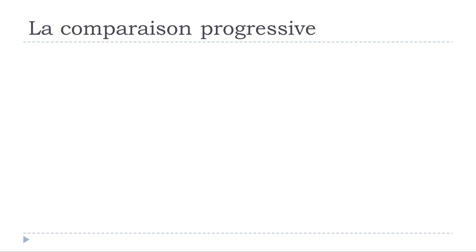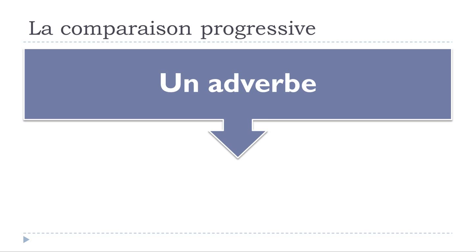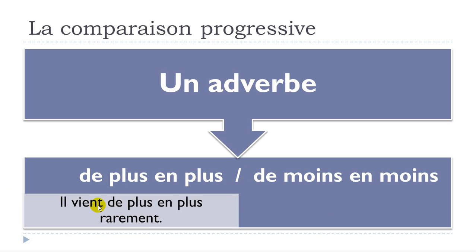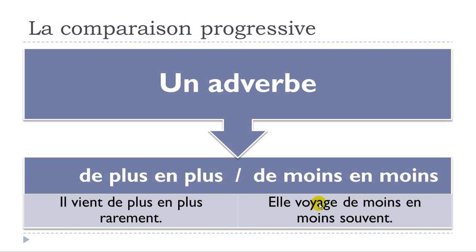Let's see now if you want to combine it with an adverbe. What a surprise — it's the same. De plus en plus, de moins en moins. So: il vient de plus en plus rarement, and then elle voyage de moins en moins souvent.